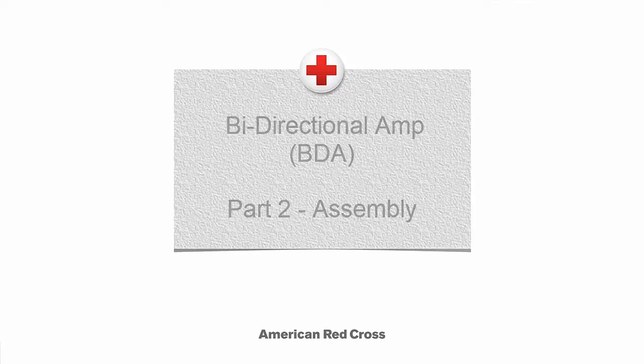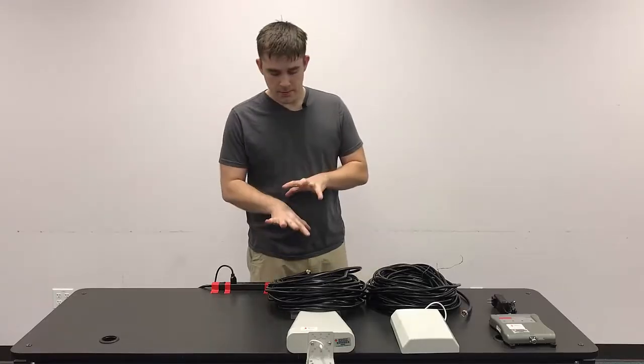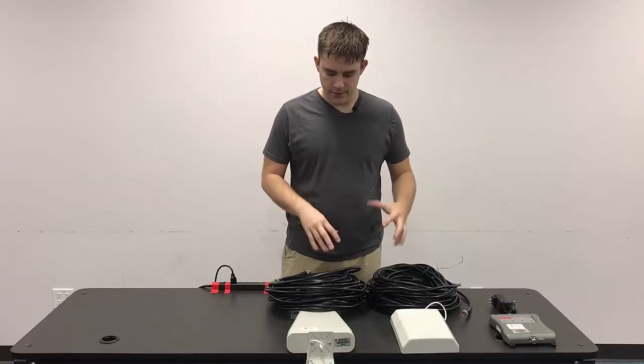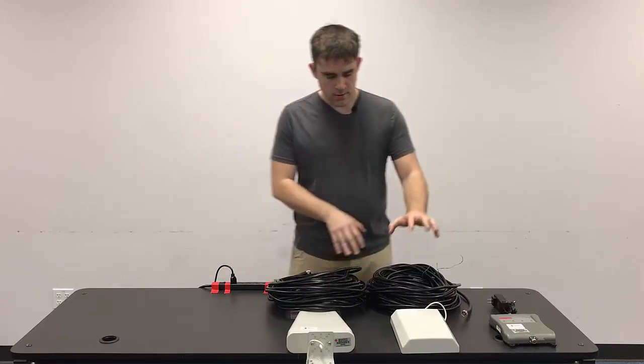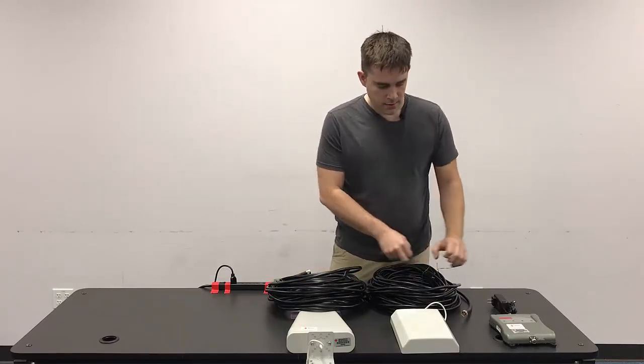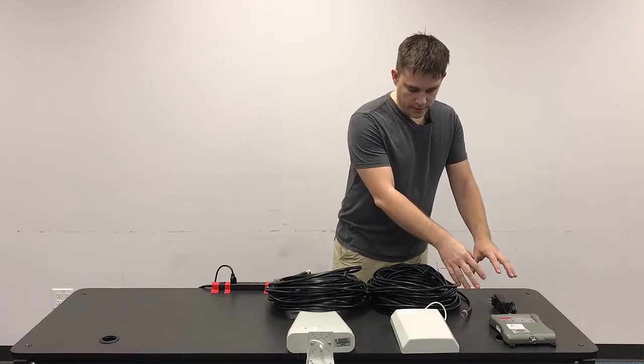Assembly of the BDA. There's essentially three separate sections of this equipment. There's going to be the outside antenna, the inside antenna, and then the actual amplifier device itself.